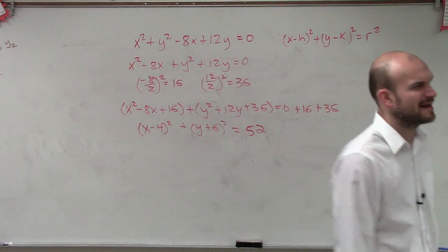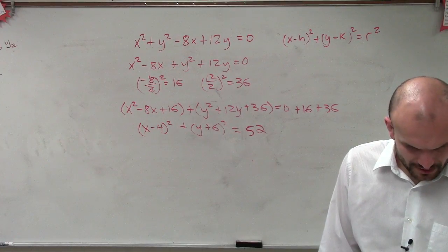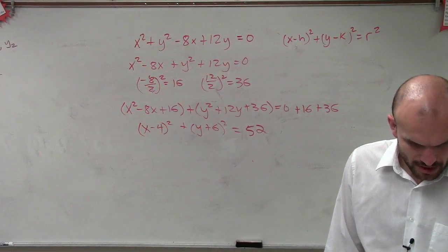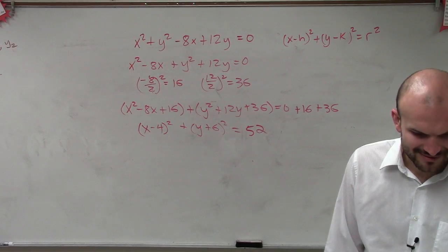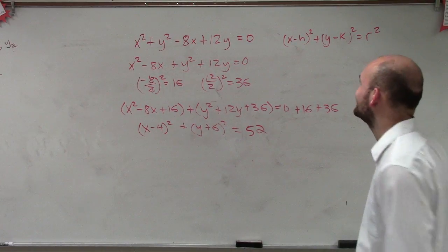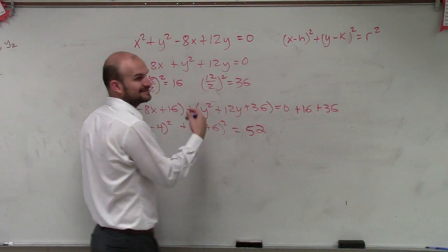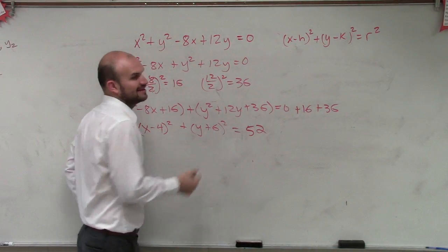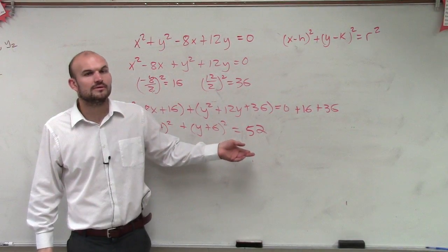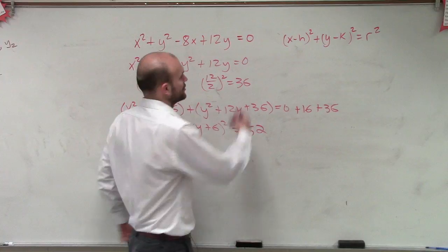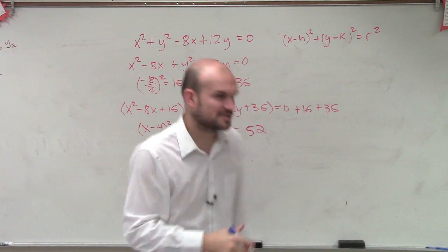OK, so now we need to determine what is my radius. Oh, I wrote the problem wrong. This is going to be important, because it's going to be kind of hard to graph a radius when you have it as 52. So let me rewrite the problem again. It's plus 12 at the end.